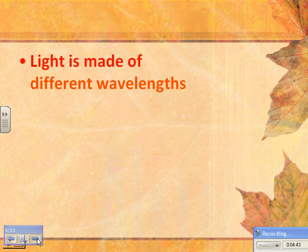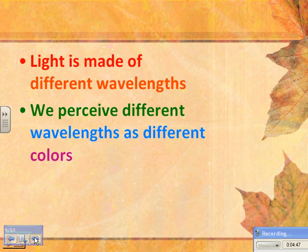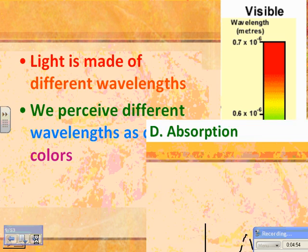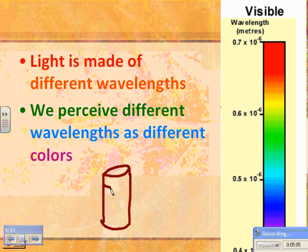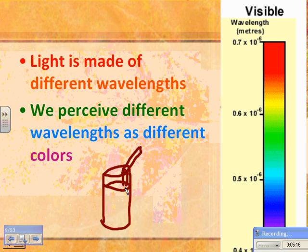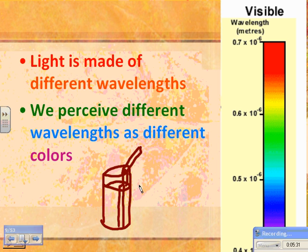Light is made of various wavelengths, and we perceive different wavelengths as different colors. If you have a glass of water and put a straw in it, you'll notice the straw seems to shift or bend at the water's surface, even though the straw itself is straight. That's because every time light goes through a different medium, it can bend.